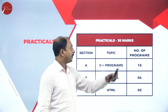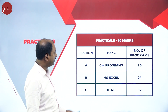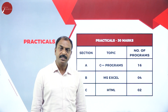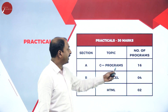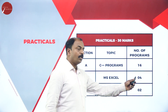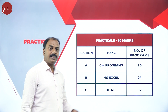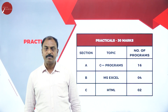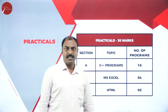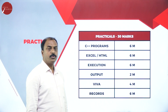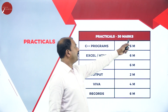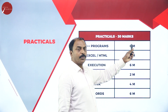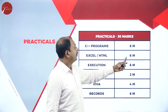For practicals, it is for 30 marks and has three sections: A, B, and C. Section A has around sixteen C++ programs. Section B has four MS Excel practicals, and section C has two HTML programs. One C++ program carries six marks and one Excel or HTML program also carries six marks.